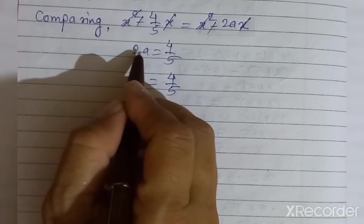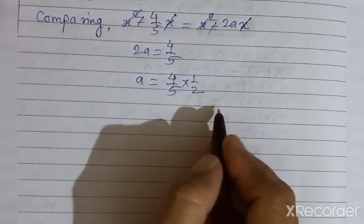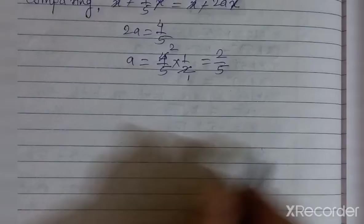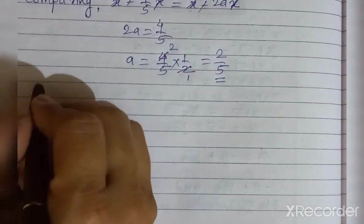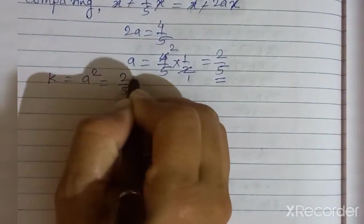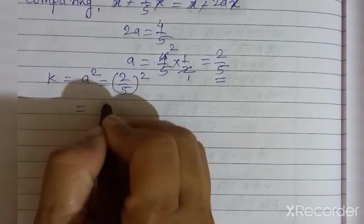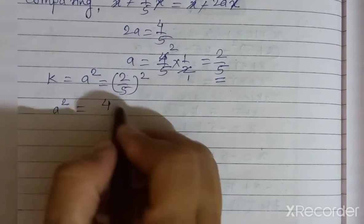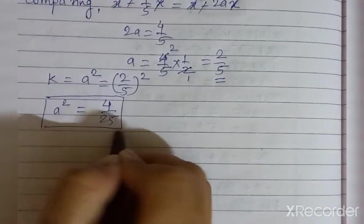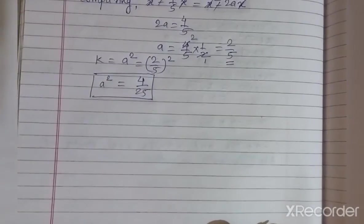Therefore a is equal to 4/5 divided by 2, which gives a = 2/5. And since k is equal to a², we have k = (2/5)² = 4/25. So 4/25 is the suitable term we need to add.